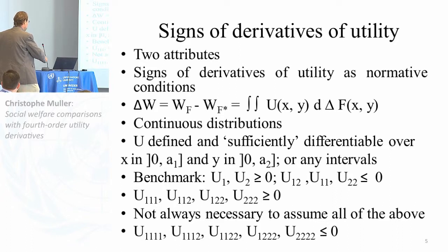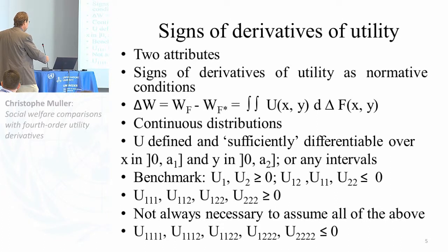There are also third-order conditions involving partial utilities supposed to be positive, which have been developed recently. For example, I used these in a paper in a journal, justifying that they correspond to some compensation: people are willing to compensate for bad health. What we are going to add are the fourth-degree partial derivatives of utilities, and I need to make sense of that.